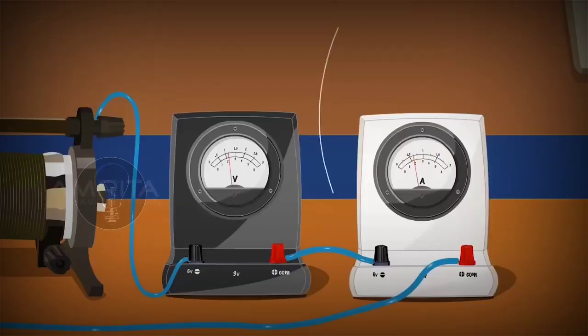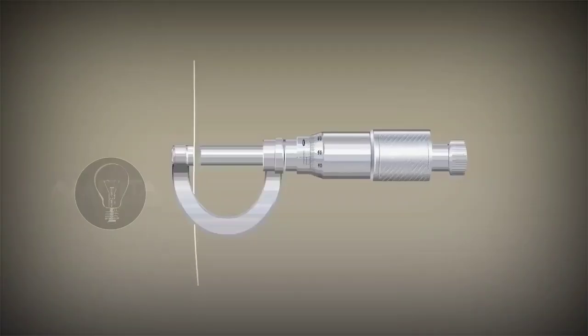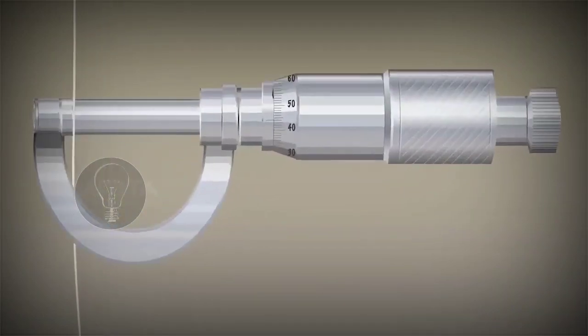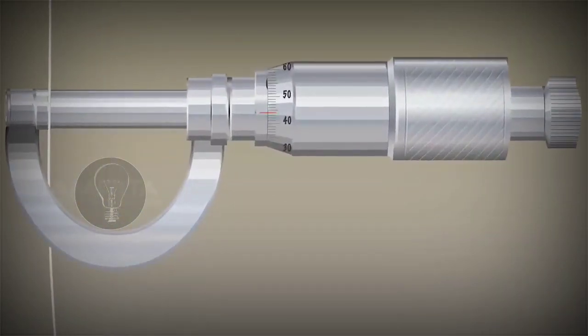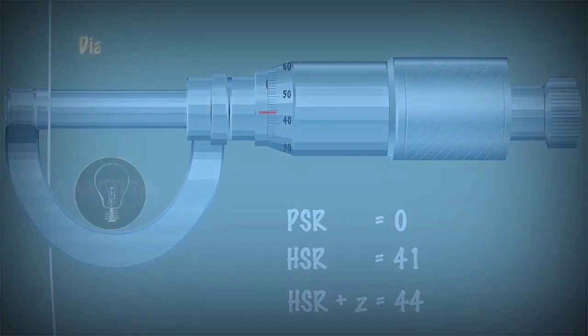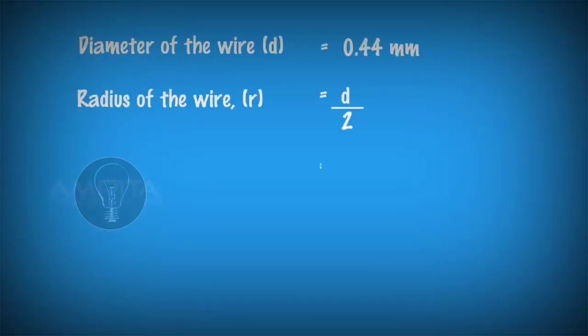Remove the resistance wire from the terminals of the voltmeter. The resistance wire is gently gripped between the stud and the screw of the screw gauge. Note the pitch scale reading and head scale reading. Calculate the diameter of the wire and hence the radius of the wire.